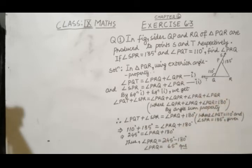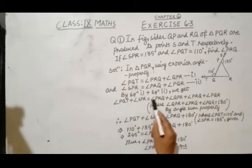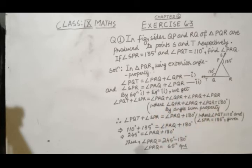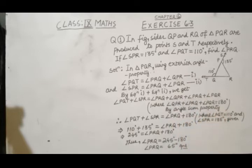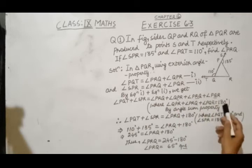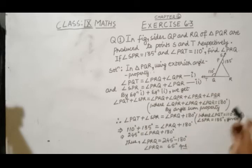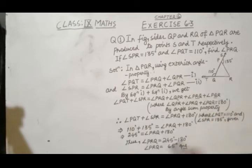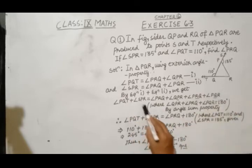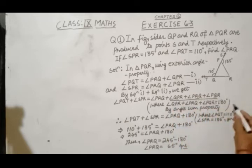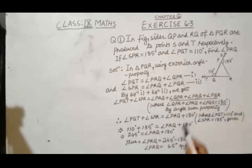Now, we add these two equations. So it becomes angle PQT plus angle SPR equals angle PRQ plus angle QPR plus angle PRQ plus angle PQR. Where sum of these three angles, angle P plus R plus Q, would be 180 degrees due to angle sum property of a triangle. So this relation becomes angle PQT plus angle SPR equals angle PRQ plus 180 degrees.